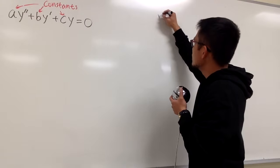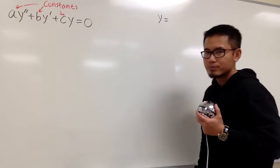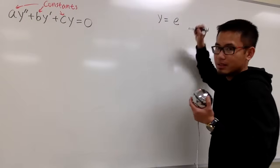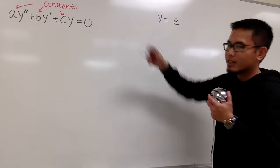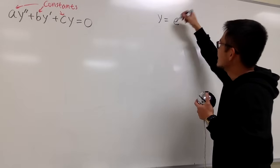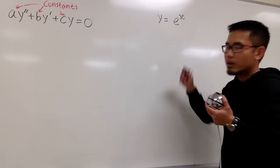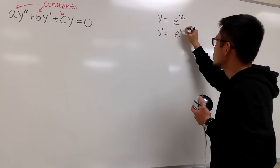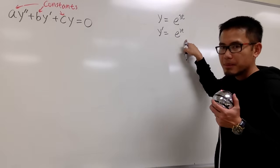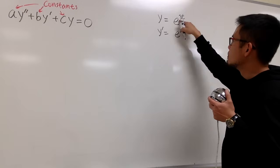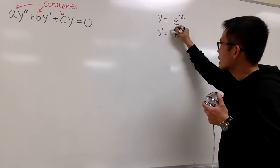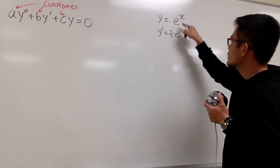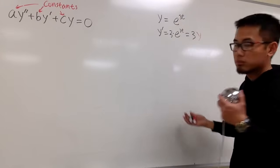On the side, let me show you: if I start with y equals e to the 3t — by the way, for second-order we use t — if you differentiate that, you get y', which gives you e to the 3t. The function part stays exactly the same, but the chain rule says we multiply by 3. So y' equals 3 times y.